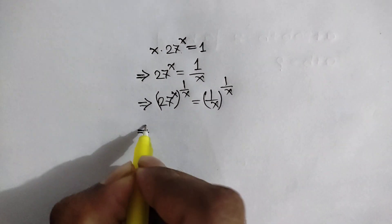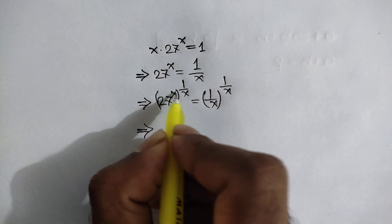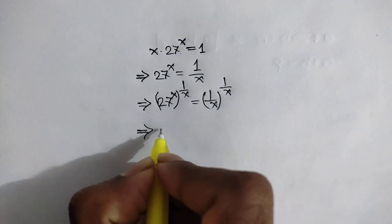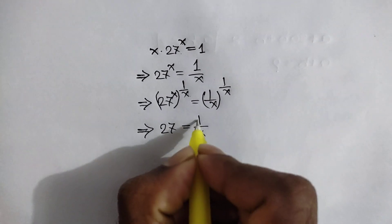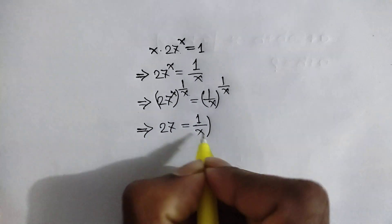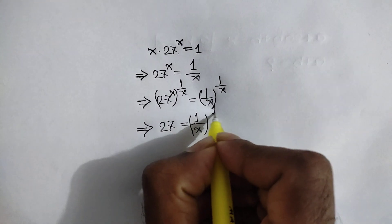This x cancels out this x, so we can write 27 is equal to 1 over x to the power 1 over x.